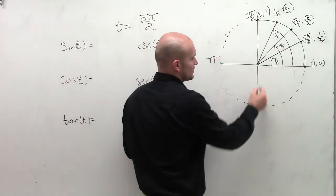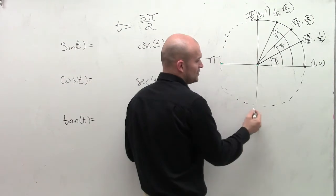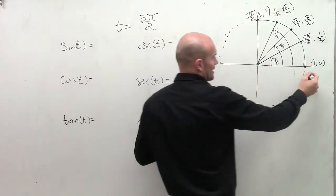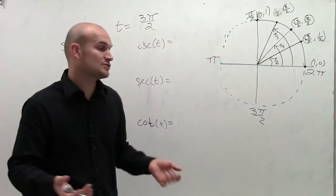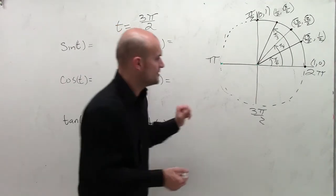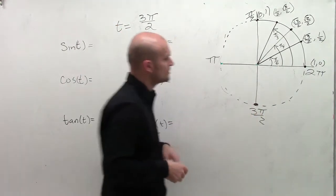Over here is π. So then another half unit would be 3π/2. And another half unit would get us to 2π. A whole revolution of a circle equals 2π.